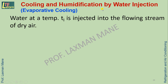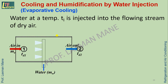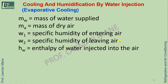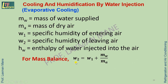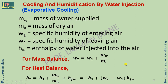The process of cooling and humidification by water injection is called evaporative cooling, where water at temperature Tl is injected into the flowing stream of dry air. The mass balance equation gives: W2 = W1 + (Mw / Ma), where Mw is the mass of water supplied, Ma is the mass of dry air, W1 and W2 are specific humidity at entering and leaving, and hfw is the enthalpy of water injected. The heat balance equation gives: H2 = H1 + (Mw / Ma) × hfw, which can also be written as H2 = H1 + (W2 − W1) × hfw.